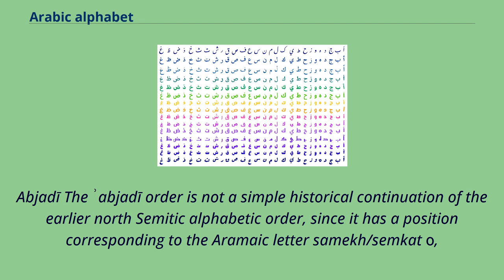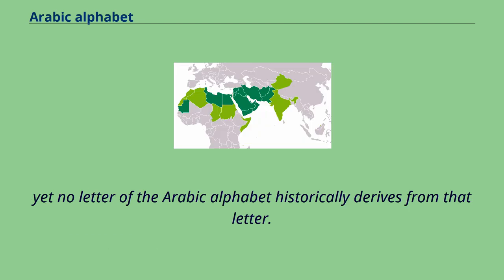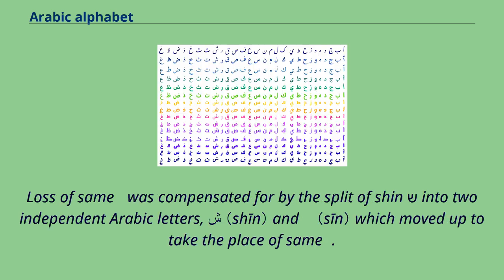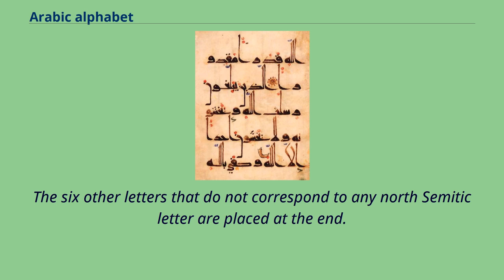The Abjad order is not a simple historical continuation of the earlier North Semitic alphabetic order, since it has a position corresponding to the Aramaic letter Samkh, yet no letter of the Arabic alphabet historically derives from that letter. Loss of Samkh was compensated for by the split of Shin into two independent Arabic letters, which moved up to take the place of Samkh. The six other letters that do not correspond to any North Semitic letter are placed at the end.